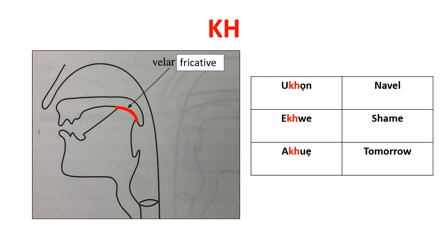The fourth sound is the voiceless counterpart of the previous velar fricative. Air is forced through the point of contact, with the sides of your tongue pressing against your molars — your larger back teeth. If you speak German, you have this sound in 'Bach' or 'machen'; in Spanish, in 'Jose' or 'Jesus.' Edo examples: one word for navel, one for shame, and one for tomorrow.